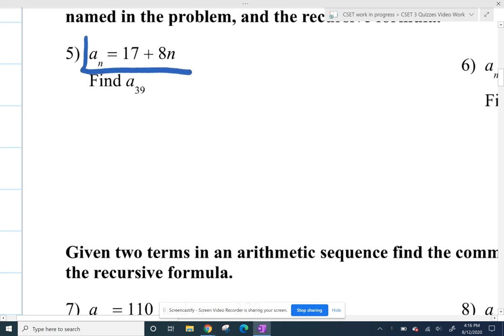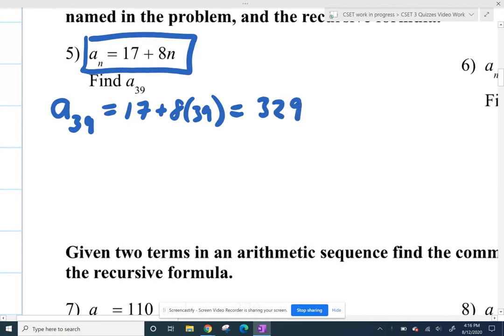So they give us this beautiful explicit formula here, and it's explicit because we can find whatever we want right away. If I want a sub 39, the 39th term, I just plug in 39 for n, and voila, I get my term. If I punch that in on my calculator, the 39th term is 329.